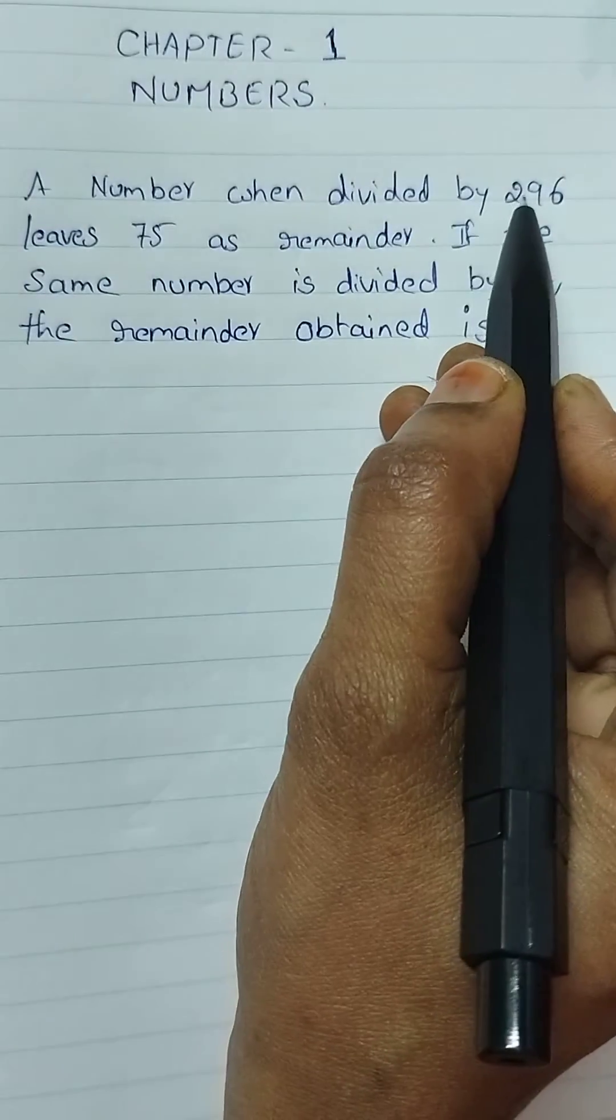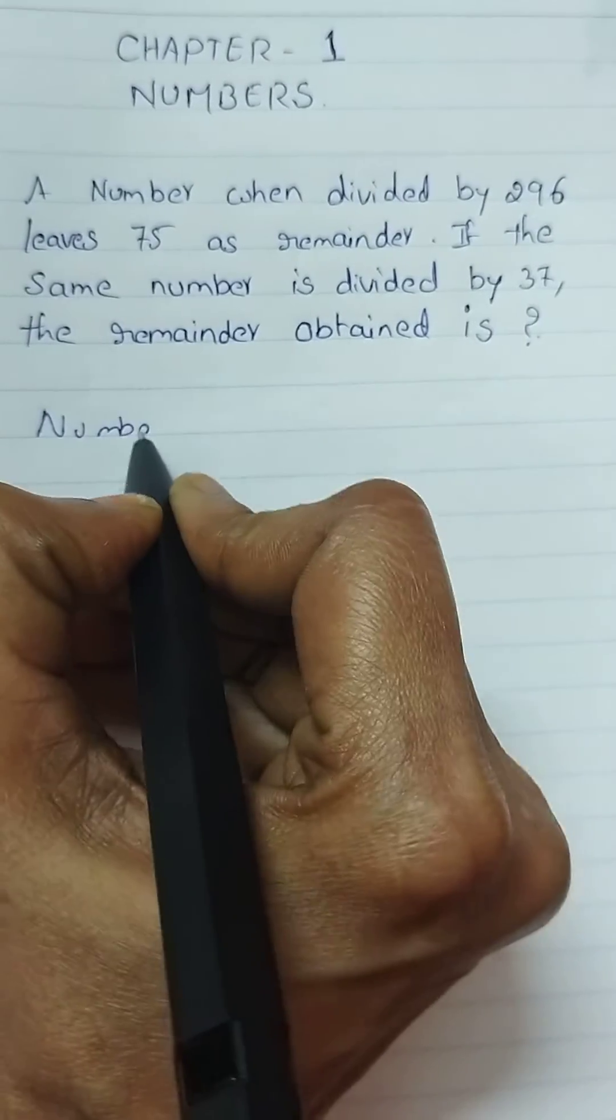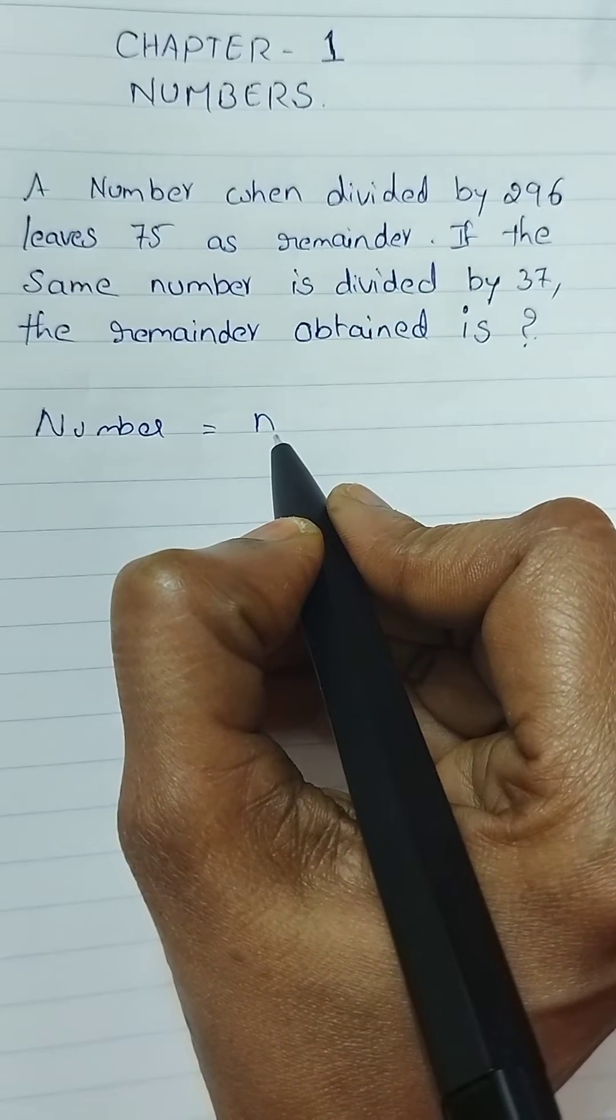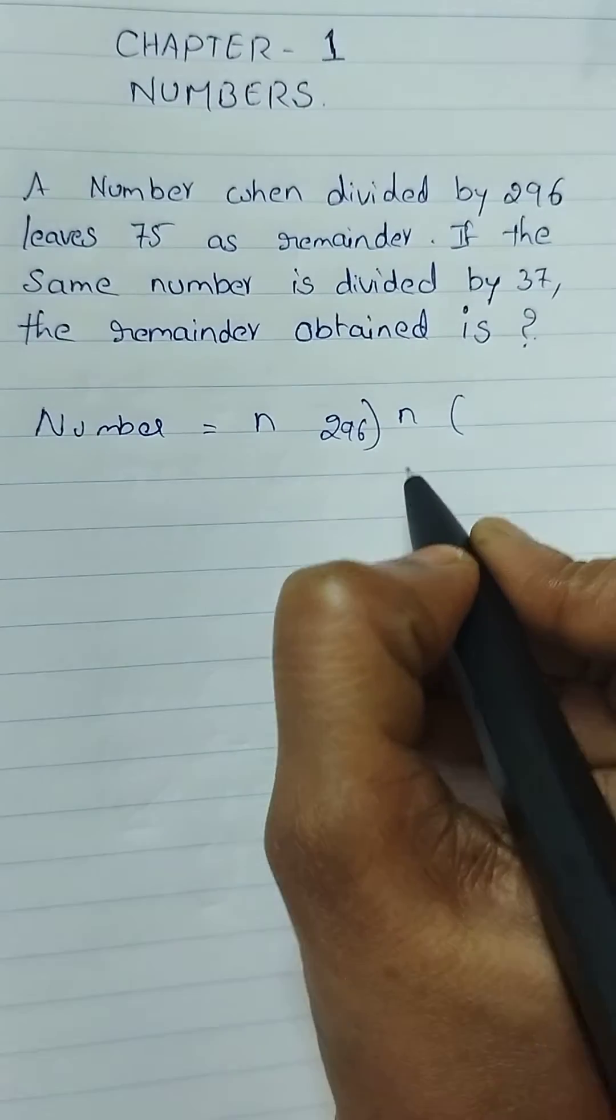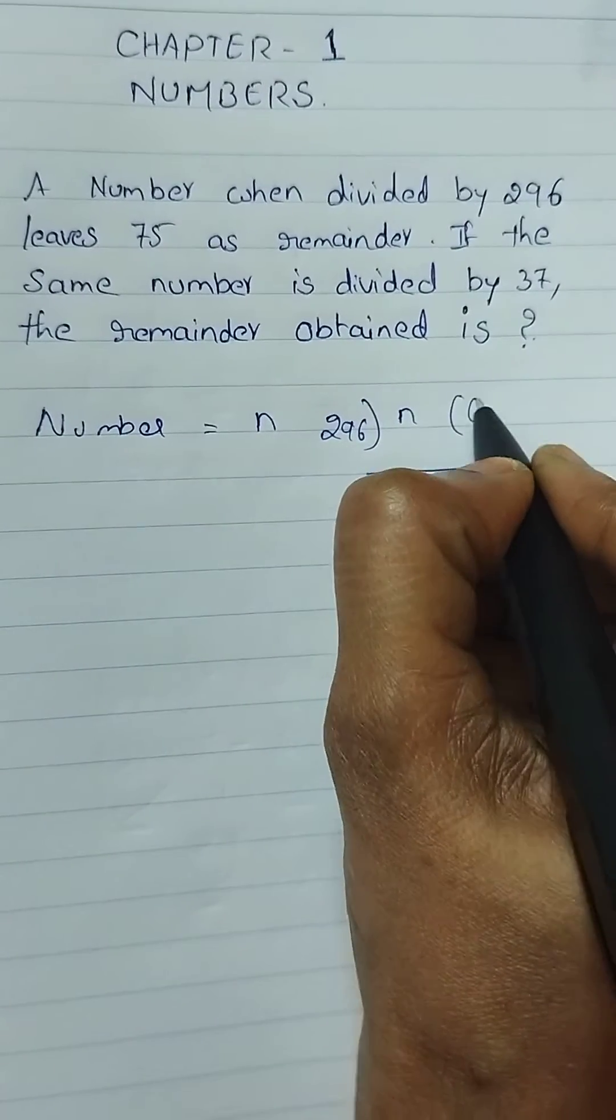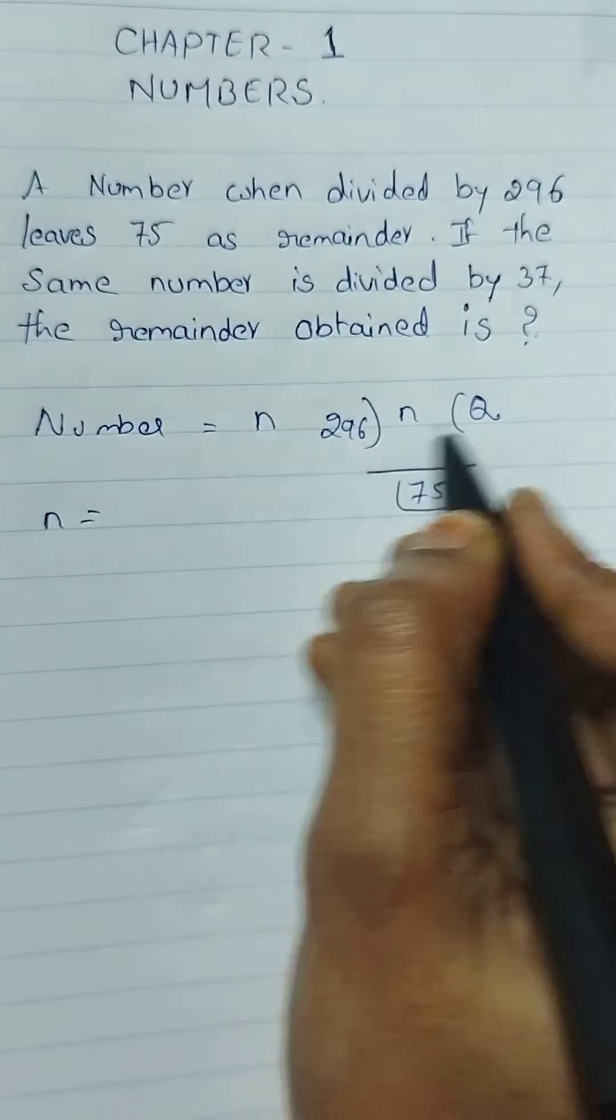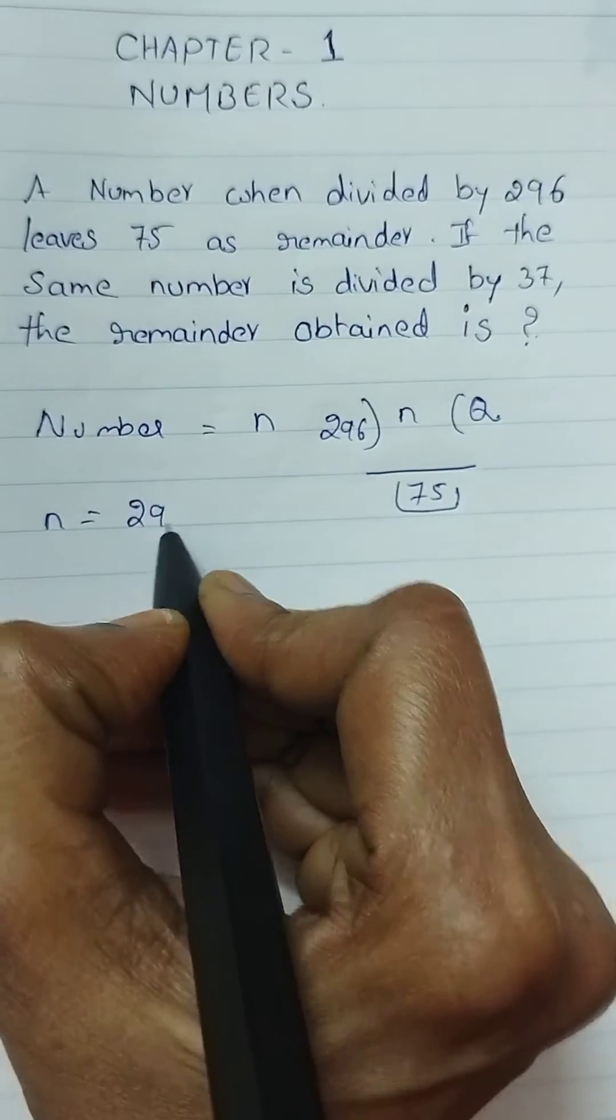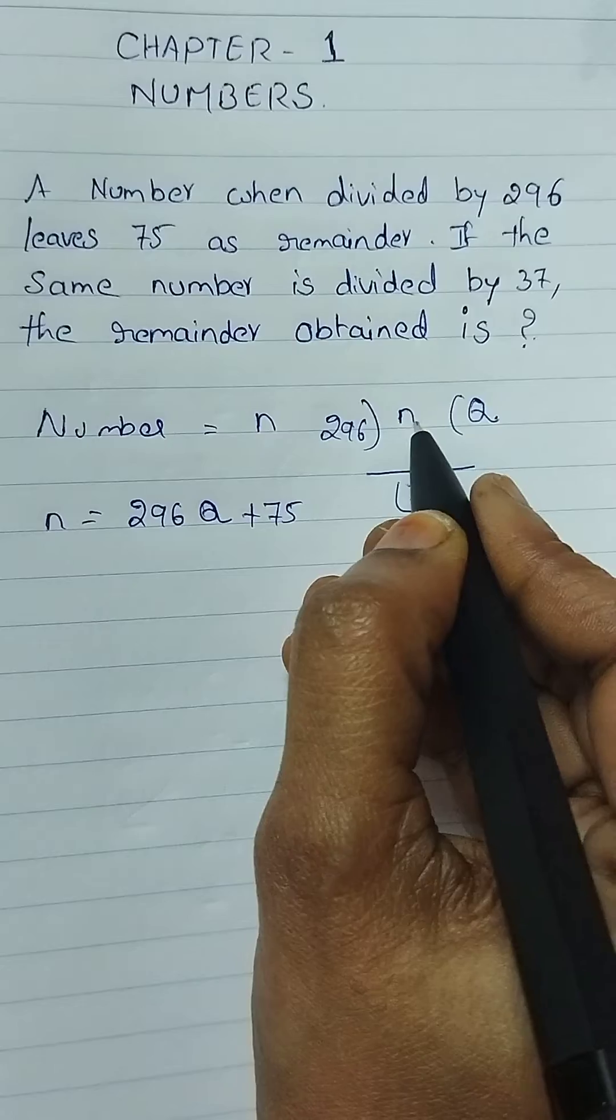It is given as a number which is divided by 296. Let the number be n. If n is divided by 296, it leaves 75 as the remainder. This is the remainder and this is the quotient.